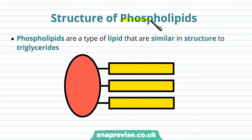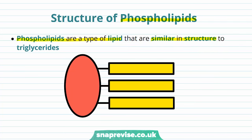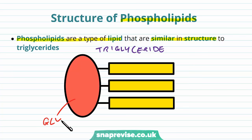A phospholipid is a similar molecule to a triglyceride. It's a type of lipid, just like a triglyceride, and it has a very similar structure. So if we take a triglyceride molecule like this one here, it's made up of two main components: a molecule called glycerol, which is a type of alcohol, and then that's attached to three fatty acids.